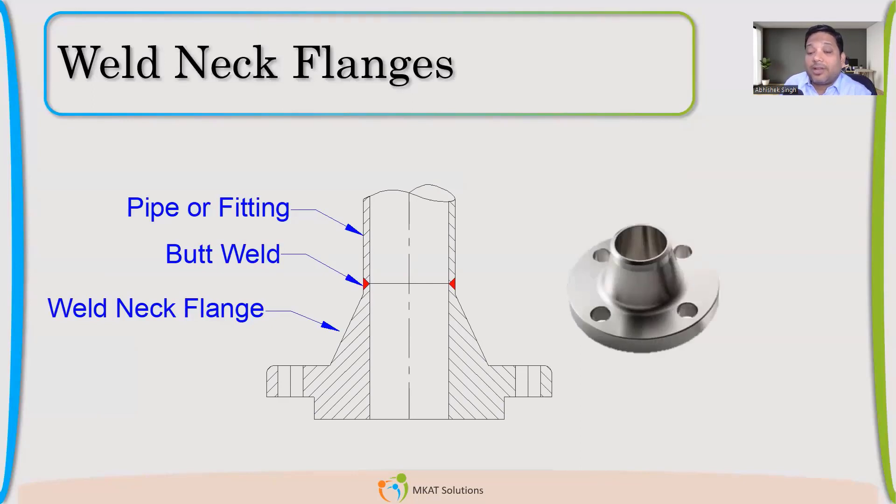This is a weld neck flange butt welded with a pipe. It can be directly welded with a pressure vessel also if it is very small and matching with the standard flange dimensions.